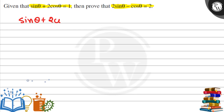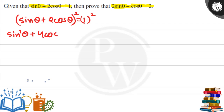We are given sin θ + 2cos θ = 1. Squaring both sides, using the (a + b)² = a² + b² + 2ab identity, we get sin²θ + 4cos²θ + 4sin θ cos θ = 1.